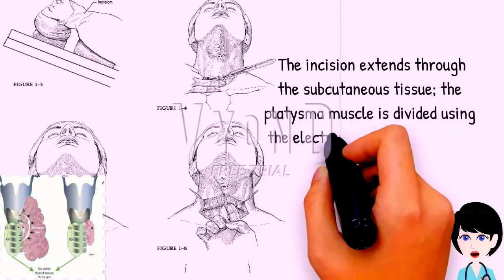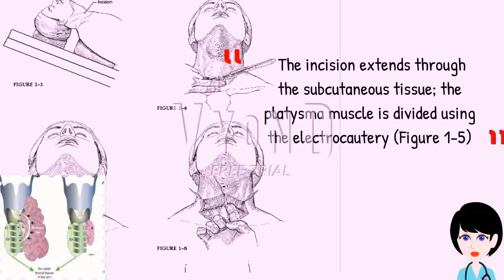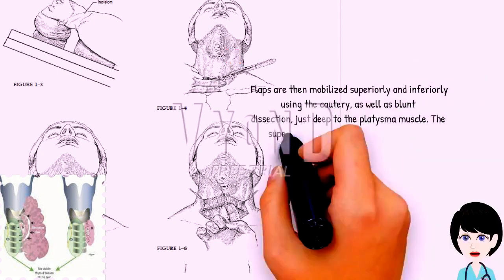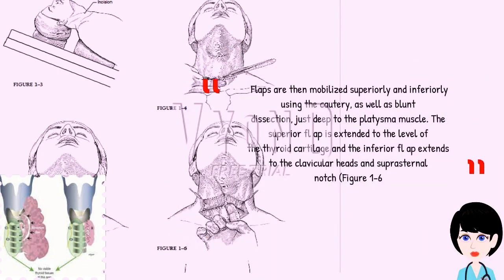The incision extends through the subcutaneous tissue. The platysma muscle is divided using the electrocautery, figure 1-5. Flaps are then mobilized superiorly and inferiorly using the cautery as well as blunt dissection, just deep to the platysma muscle. The superior flap is extended to the level of the thyroid cartilage, and the inferior flap extends to the clavicular heads and suprasternal notch, figure 1-6.